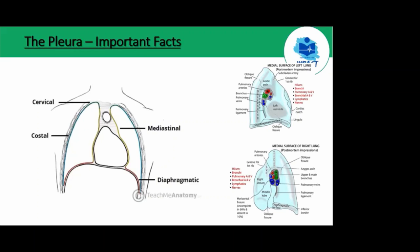The visceral pleura, as the name implies, is stuck to the actual lungs themselves and is innervated by autonomic nerves from the pulmonary plexus. As a result, pain from visceral pleura disruption would be poorly localized. Its blood supply comes from the bronchial arteries, whereas the parietal pleura is vascularly supplied by intercostal arteries.